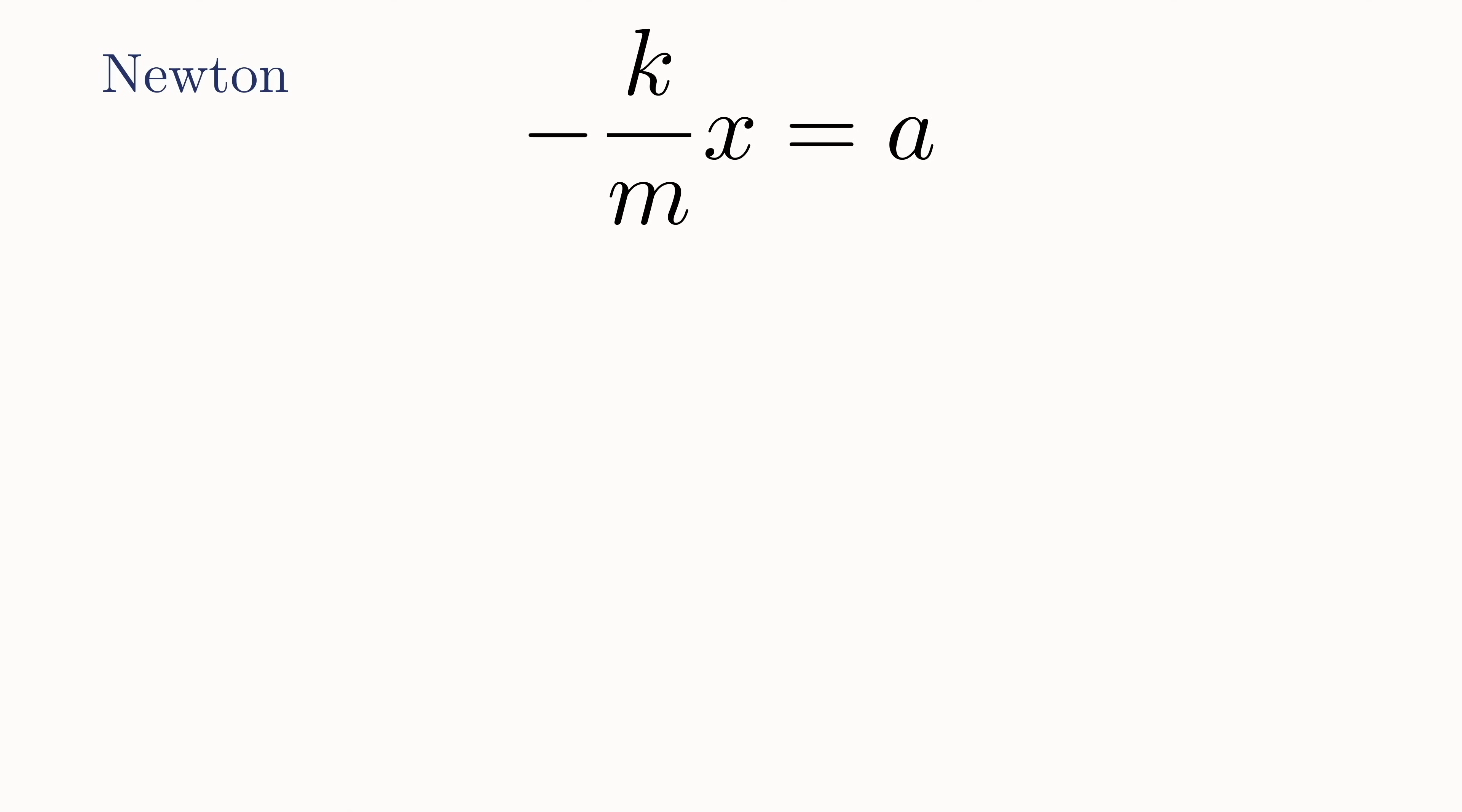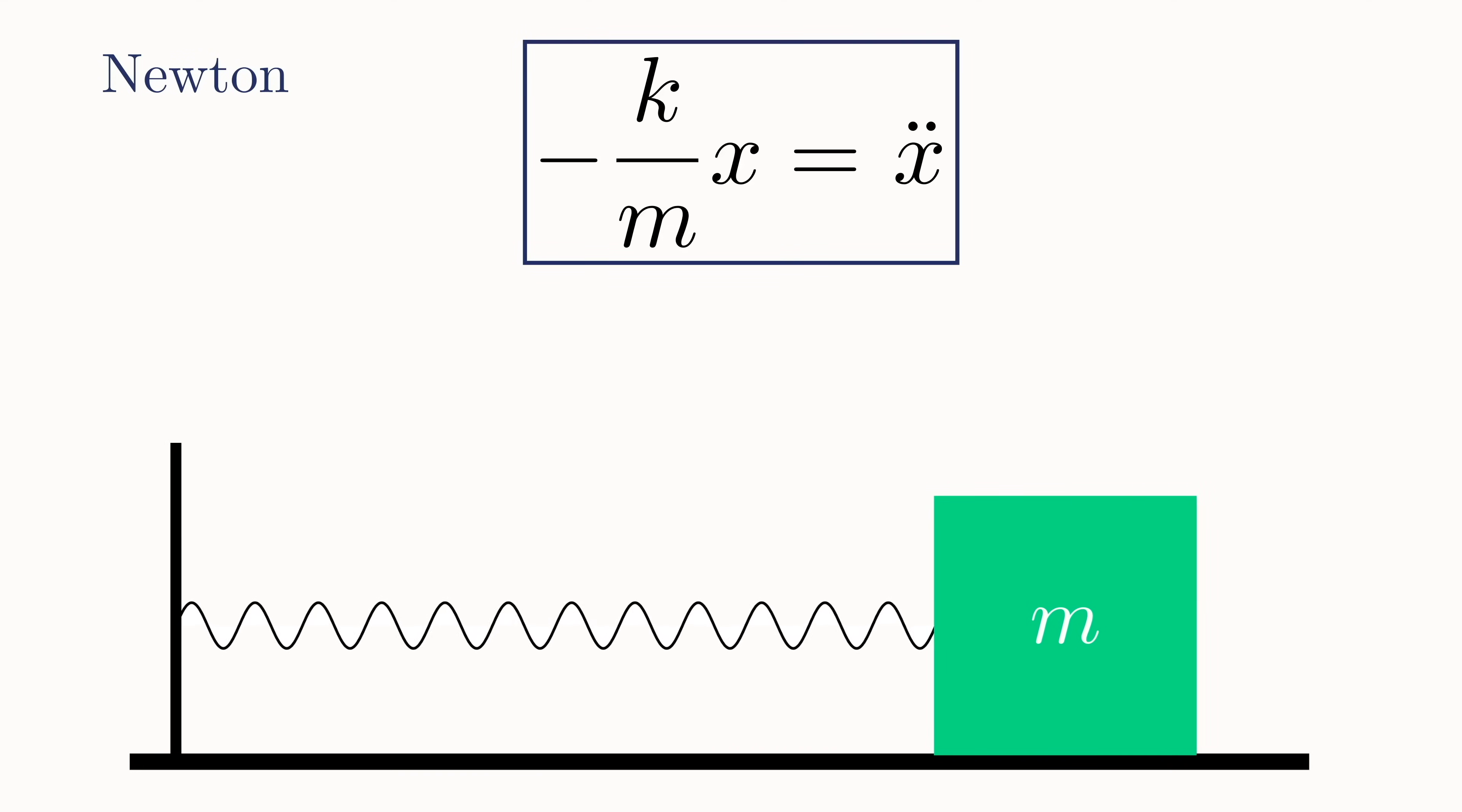Since velocity is just the change in position over time, whenever we have the position of an object given by x, we can take the derivative of x with respect to time to get the velocity. A common way physicists write this is as x-dot, so the dot just represents the d by dt part. And if we take another derivative, we get the acceleration, which is x-double-dot. So plugging this into our top equation, we get negative k over m times x is equal to x-double-dot. This is the equation of motion for a mass spring system.